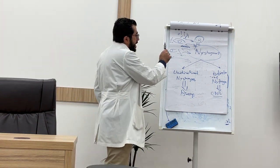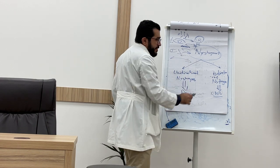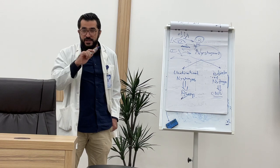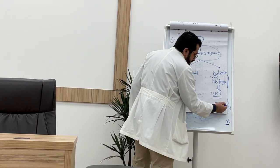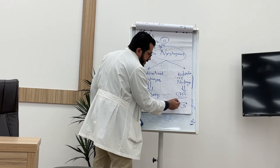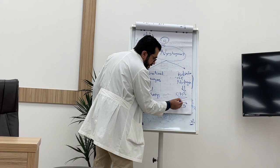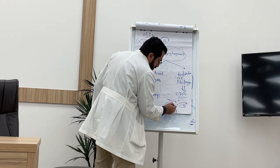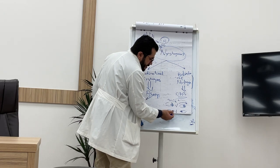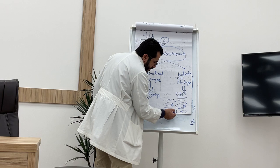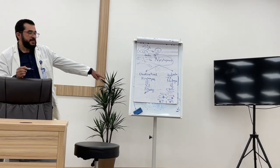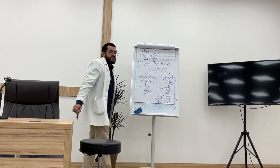When the patient has unidirectional nystagmus, it is a benign, peripheral cause. When they have bidirectional or direction-changing nystagmus — meaning when looking right the fast phase goes right, but when looking left the fast phase goes left — this is bidirectional nystagmus and is a bad sign indicating a CNS problem.